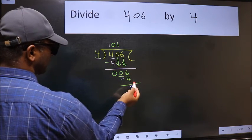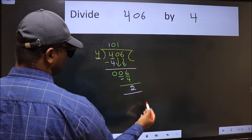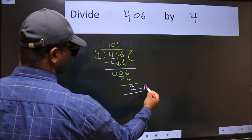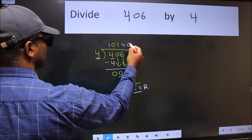No more numbers to bring down. So we stop here. This is our remainder and this is our quotient.